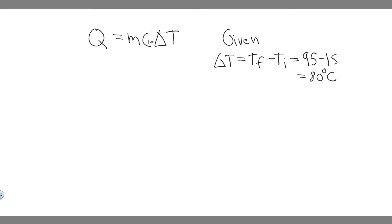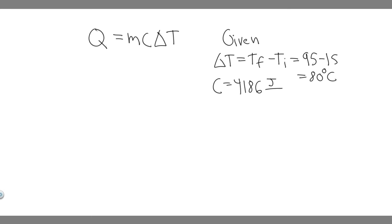Now what we need is C — the specific heat capacity of water. The specific heat capacity of water is 4,186, and the units are joules per kilogram degree Celsius. C is just a constant, so that's just a number you need to have written down — it's in your textbook.